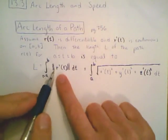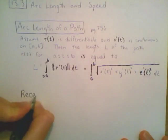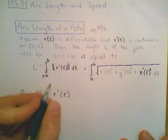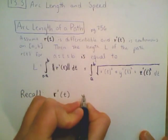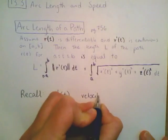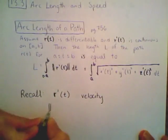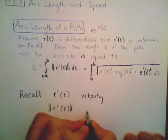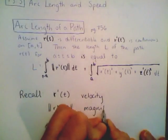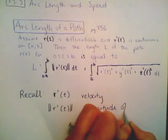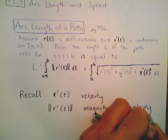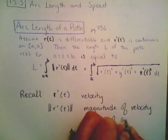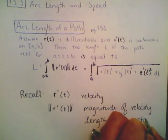Let's do a quick review of some things. Recall from our previous discussion that r prime of t is the derivative of our function and it can be thought of as a velocity function. These straight bracket symbols denote the magnitude of the velocity vector. Magnitude is simply the length of the vector.